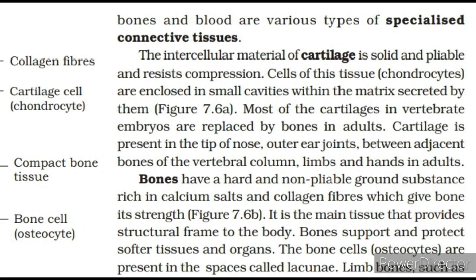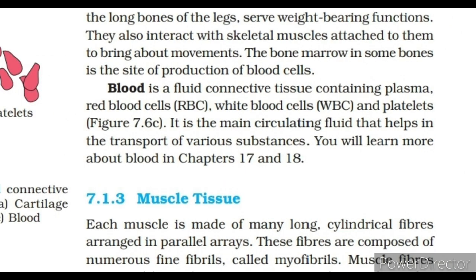Limb bones, such as the long bones of the legs, serve weight-bearing functions and interact with skeletal muscles attached to them to bring about movements. The bone marrow in some bones is the site of production of blood cells. Blood is a fluid connective tissue containing plasma, red blood cells (RBC), white blood cells (WBC) and platelets. It is the main circulating fluid that helps in the transport of various substances.